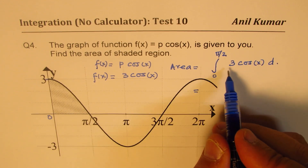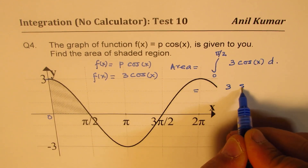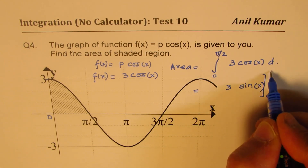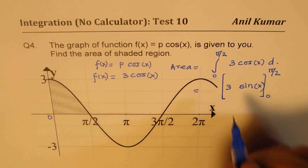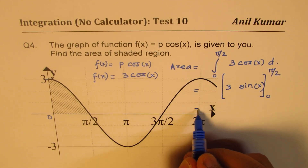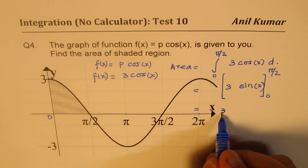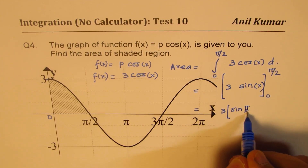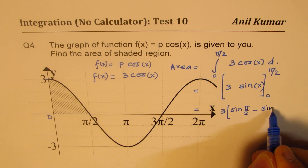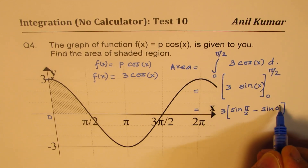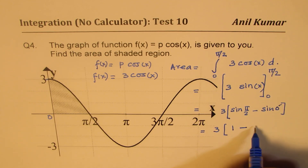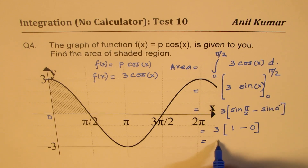The integral of 3·cos x is 3·sin x, and the interval is from 0 to π/2. So we can calculate this value as 3 times (sin(π/2) minus sin(0)). Sin(π/2) is 1 and sin(0) is 0. So that gives us a value of 3 square units.